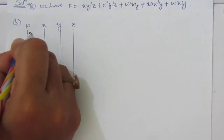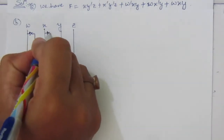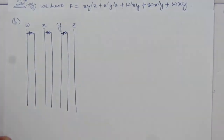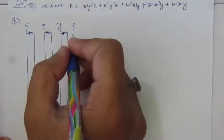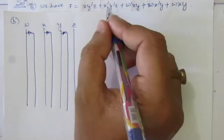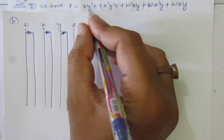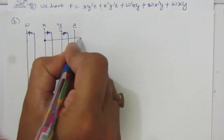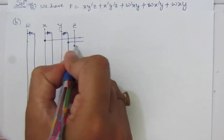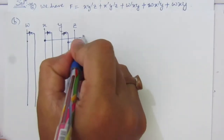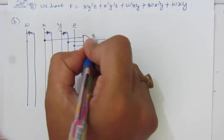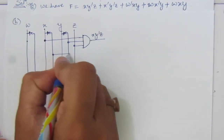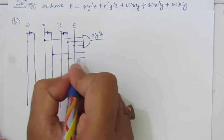We have to use an inverter to get W̄, another inverter to get X̄, and another inverter to get Ȳ. There is no Z̄ in the function, so we will not generate it. This is a sum of minterms expression, so first we find the product terms. Using an AND gate we get the term XȲZ, and using another AND gate we get X̄ȲZ.